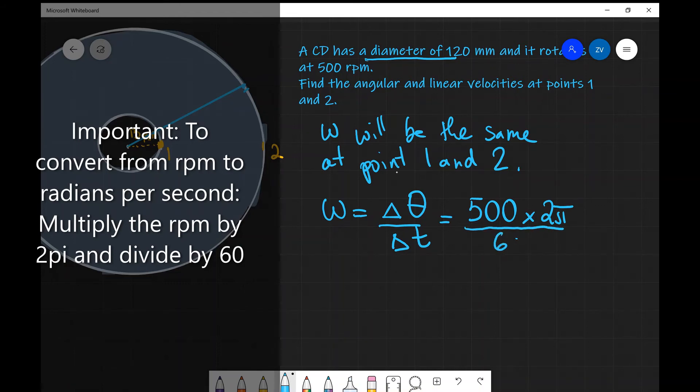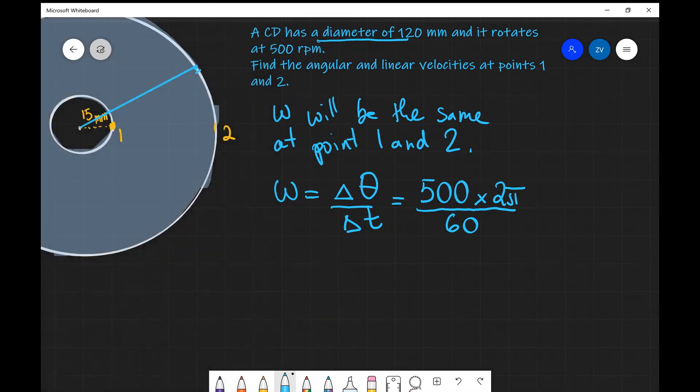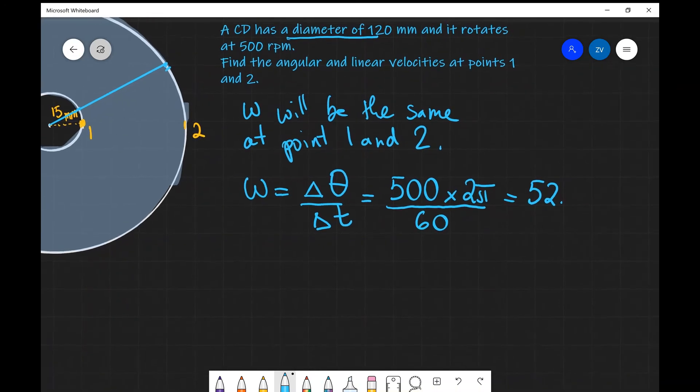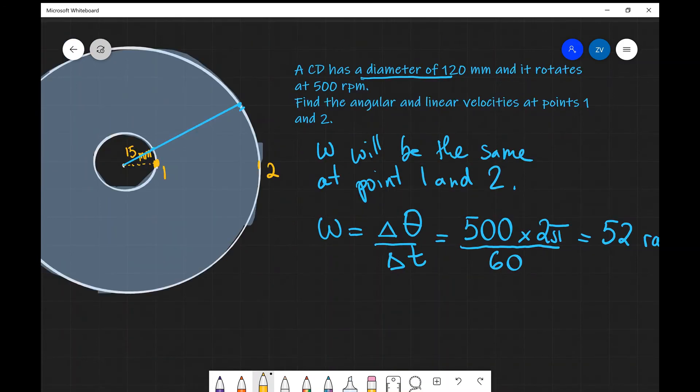And if we put that into our calculator, 500 times 2 pi divided by 60, we're going to get 52.36. In this case, we're just going to be using two significant figures. So let's just leave it at 52 radians per second.